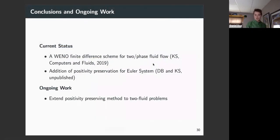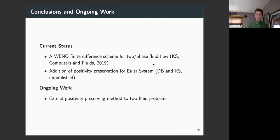In summary, we've developed a finite difference scheme with a positivity-preserving procedure for the Euler system, and we're continuing to extend it to the general two-fluid problem. The goal is robust code that handles challenging problems with large discontinuities, enforces positivity, and avoids the crashes that occurred without positivity preservation. That's all for today — thank you for your time.